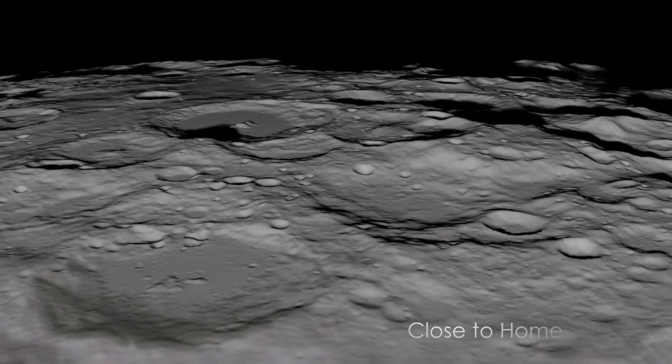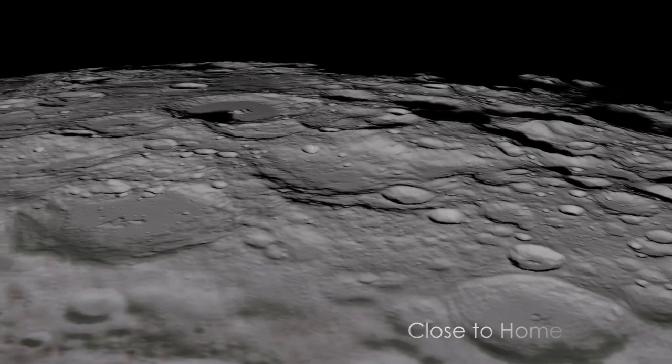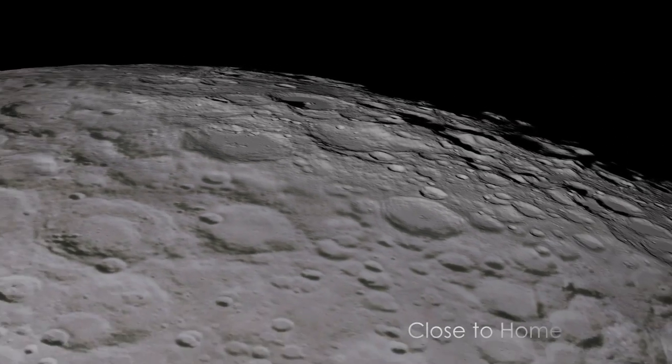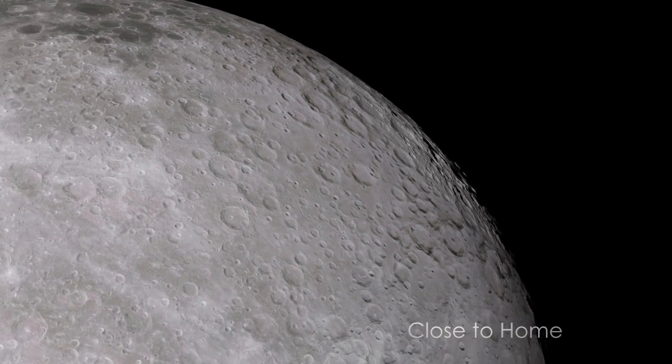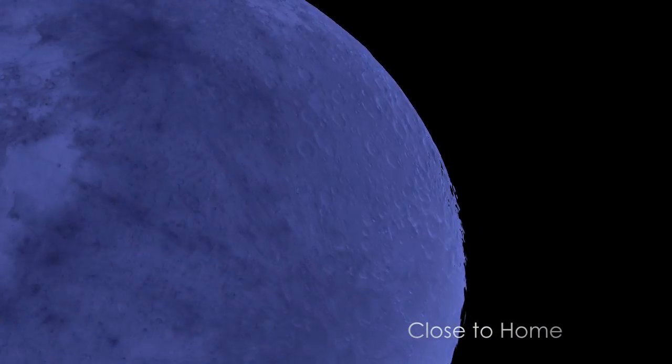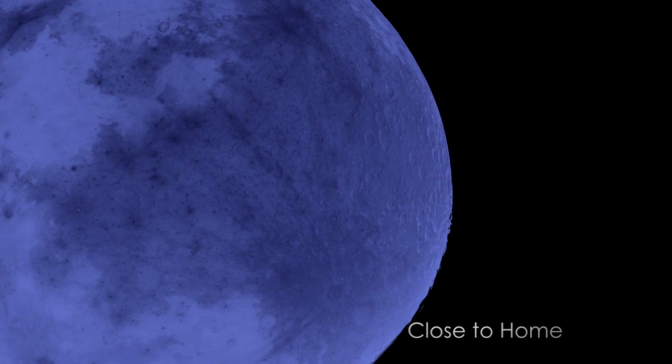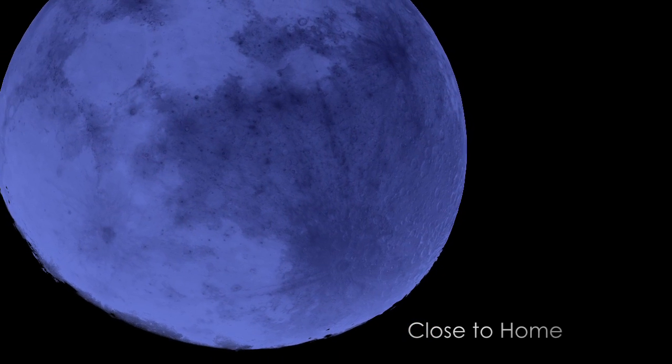IBEX has also scanned another nearby world with surprising results. The moon has no atmosphere or magnetosphere, so the solar wind slams unimpeded into its surface. About 10 percent of the impinging solar wind protons bounce off the lunar surface, becoming ENAs as they do.